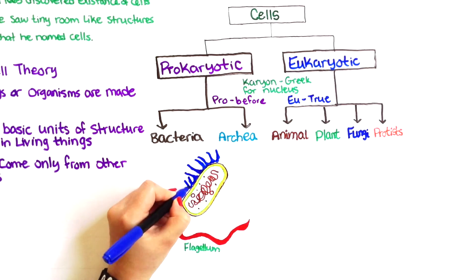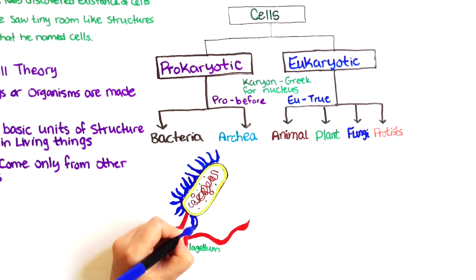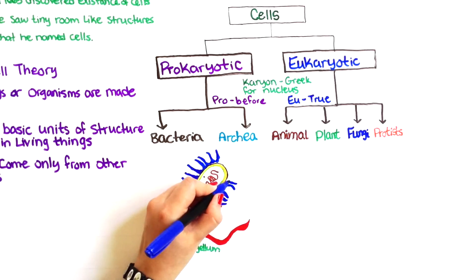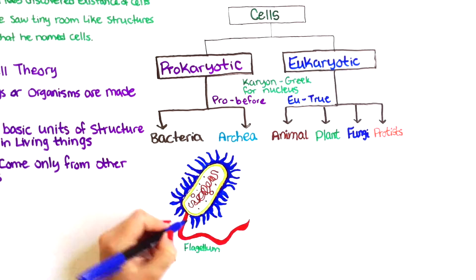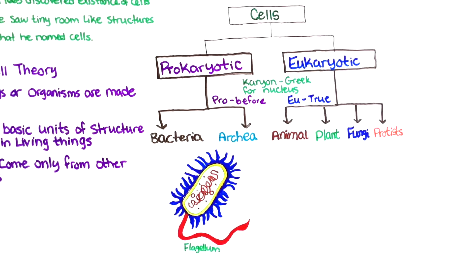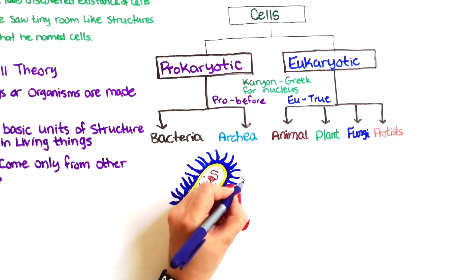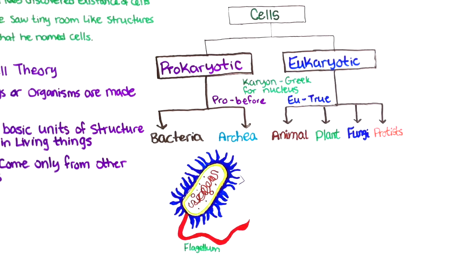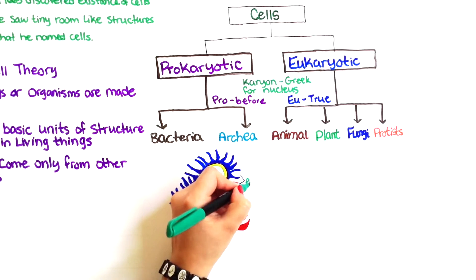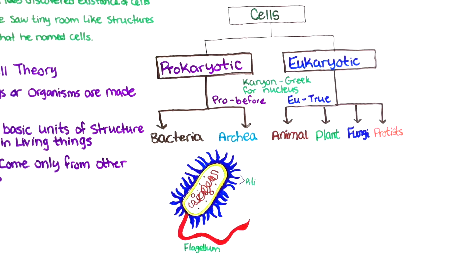Bacteria can also have various projections sticking out of their cell walls called pili, which are hair-like appendages found on the surface of many bacteria. Pili are needed in order for bacterial conjugation to occur. Bacterial conjugation is basically the transfer of genetic material — a plasmid —